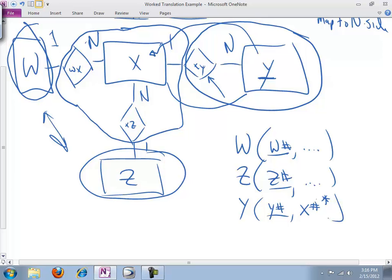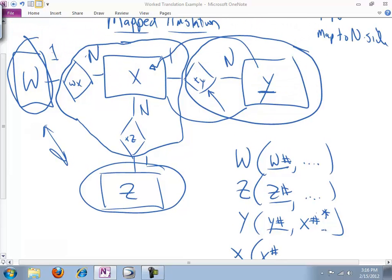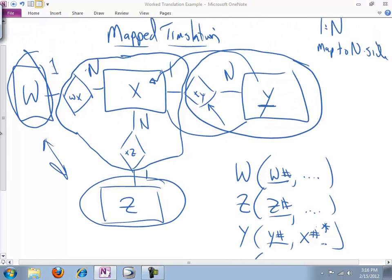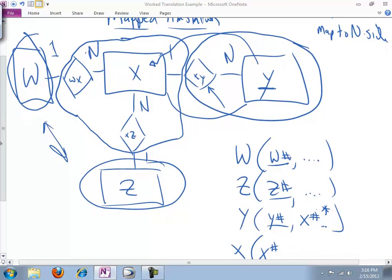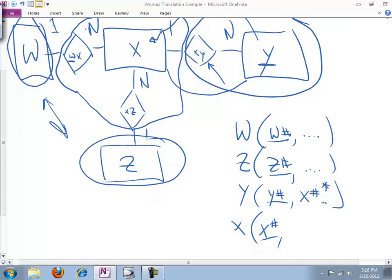So we can put this here, not violate our definition of the relational model or our primary key uniqueness requirement. So we're looking good here. And that's not new. That's something we've seen before. And then finally, we've got X, which is a little more complicated. X has X number by assumption as its primary key.